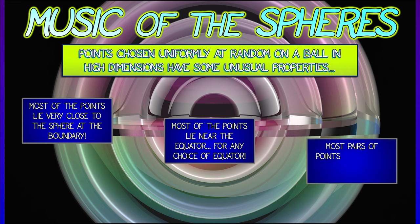Most pairs of points have nearly the same distance between them. You pick any two points in the ball, and I can tell you with high probability what the distance between them is going to be, and it'll be pretty close. This does not happen in 2D, it does not happen in 3D, it doesn't happen in 37D, but it does happen in very high dimensions.